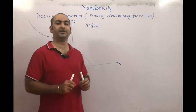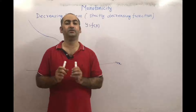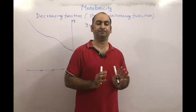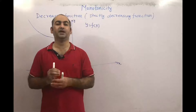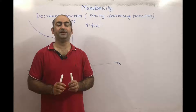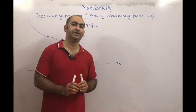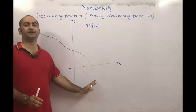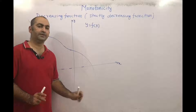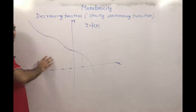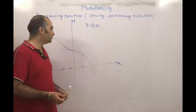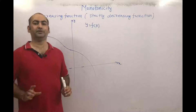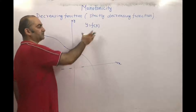Next, we are discussing how to find out whether a function is a decreasing function or not. If a graph is given, we can find out easily, but if a graph is not given, then how to find out? We are taking one graph — a strictly decreasing function graph — to explain this.